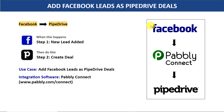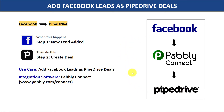Imagine this: you have generated a new lead called John from Facebook Forms. You have John's name, email address, and all those details, and you want to add John as a deal in Pipedrive. You have two choices. The first choice is to copy all the details of John from Facebook, sort it out, and manually add him as a deal in Pipedrive.